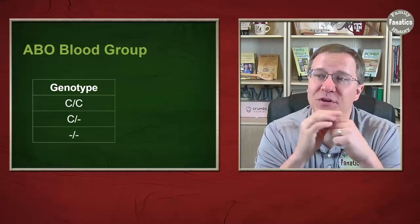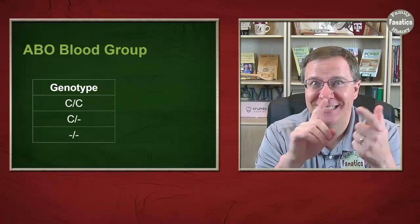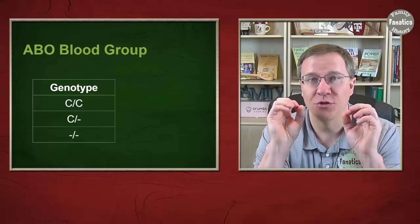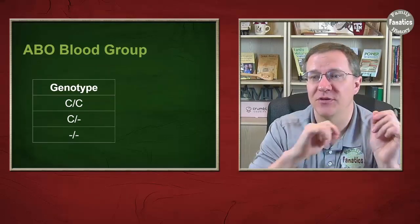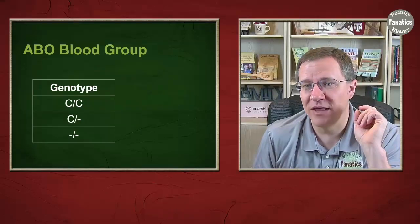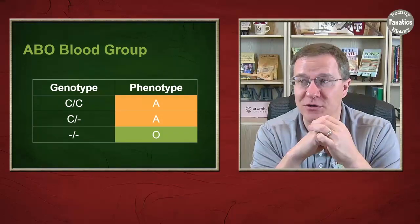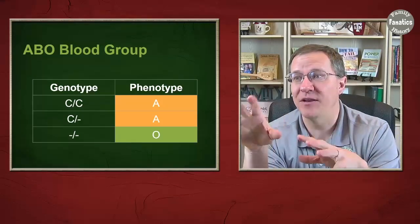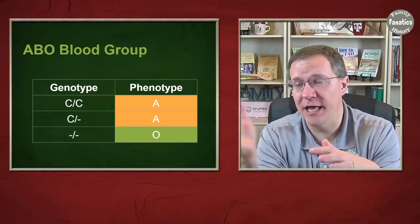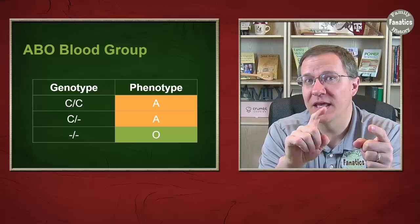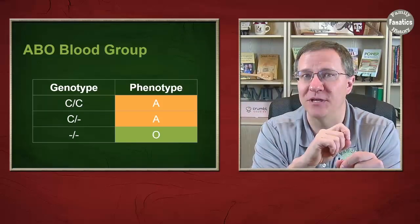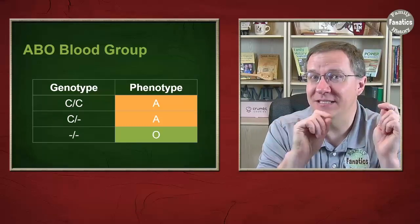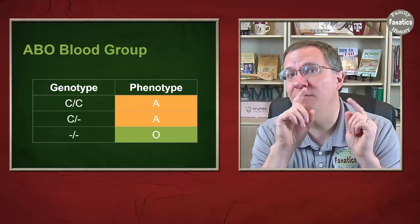We have three different genotypes that I showed: CC, C nothing, and nothing nothing. Those are three different genotypes. But when we translate that into the phenotype, we see that CC is a phenotype of A blood, C nothing is also a phenotype of A blood, and nothing nothing is the phenotype of O blood.